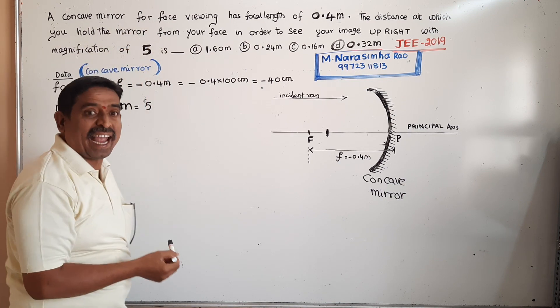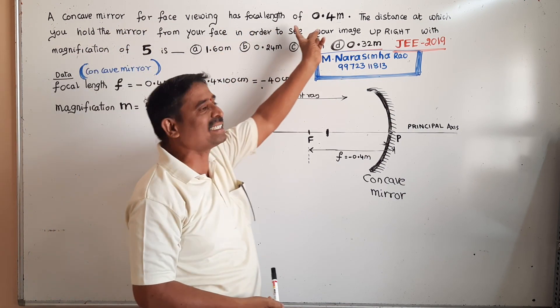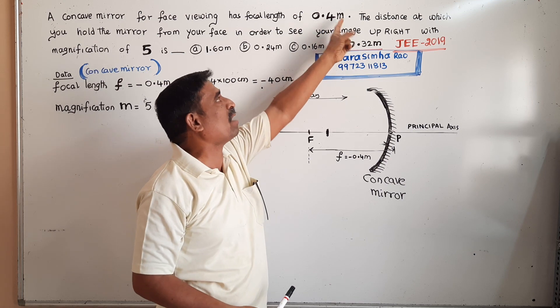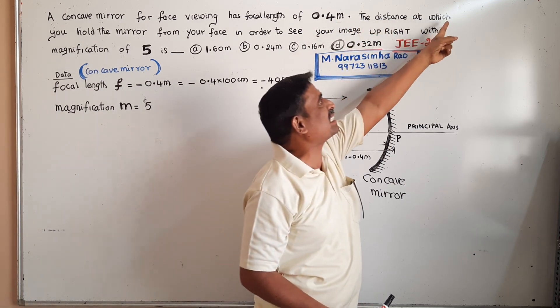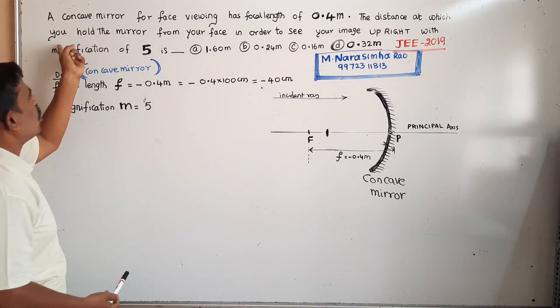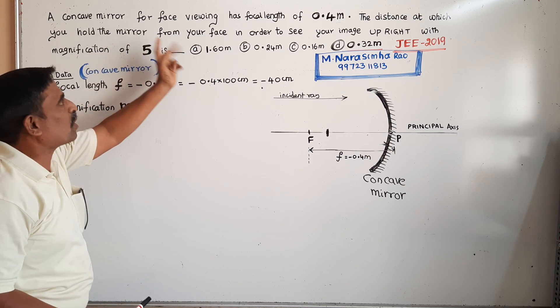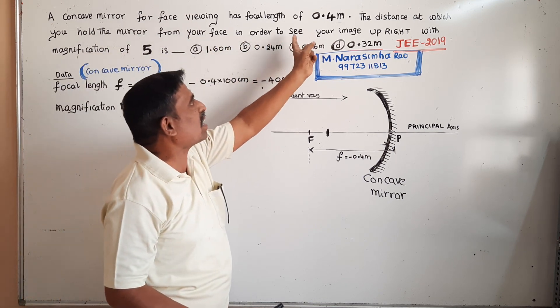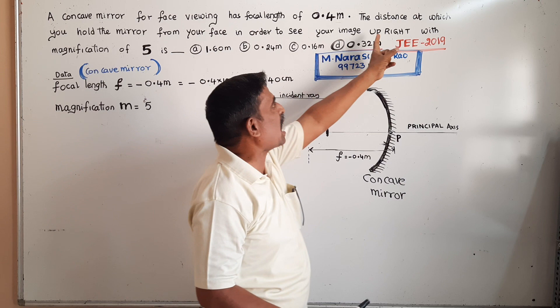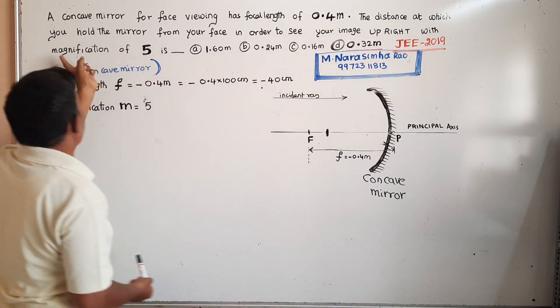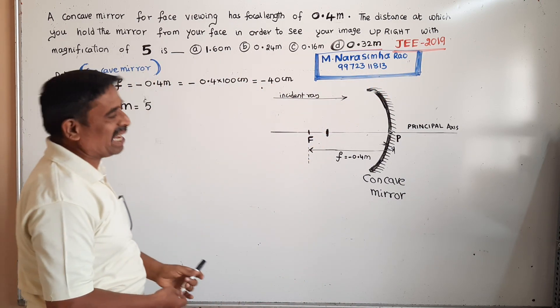A concave mirror for face viewing has a focal length of 0.4 meters. The distance at which you hold the mirror from your face in order to see your image upright with a magnification of 5 is...